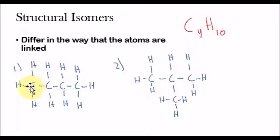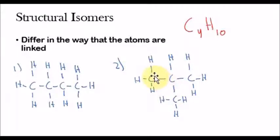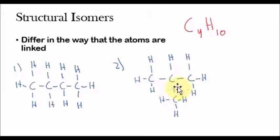They're structural isomers because they differ in the way that the atoms are linked. Here we have an unbranched chain of carbon atoms, and here we have a branched chain of carbon atoms. As we talked about in the previous video, hydrocarbons can differ in length, or they can be unbranched and branched, and can also be formed by rings. Structural isomers are different in the sense that the atoms are bonded to each other differently.